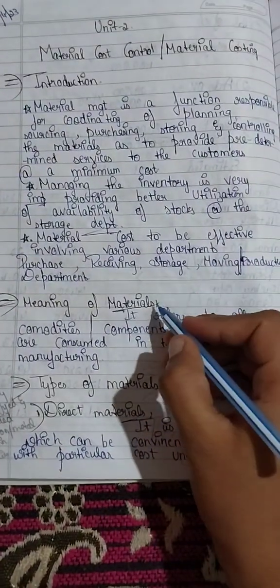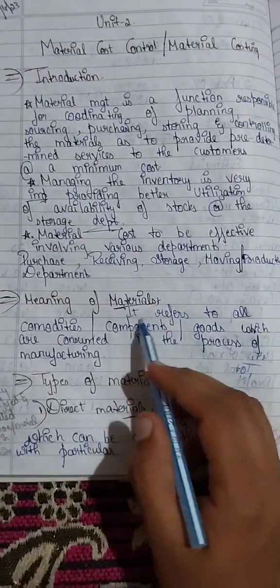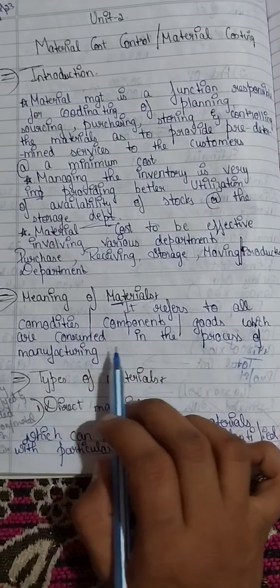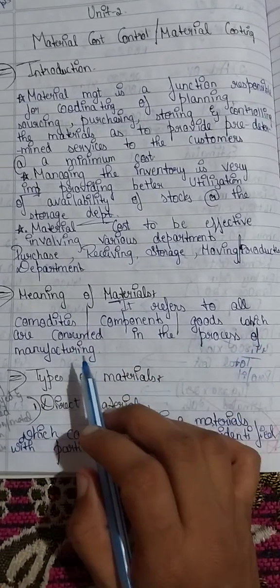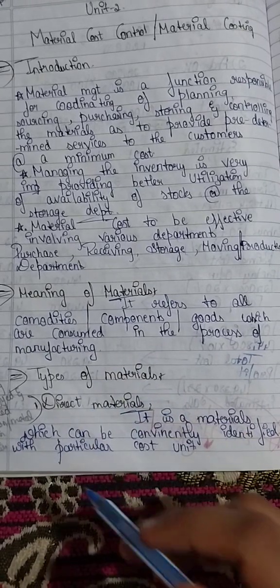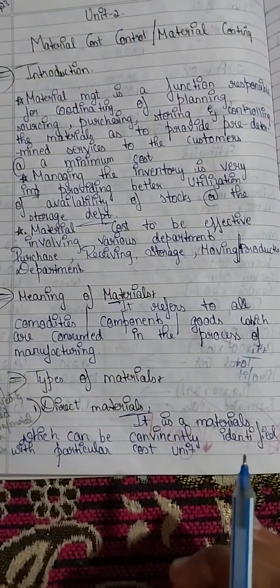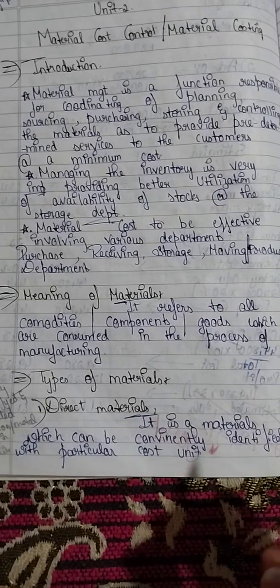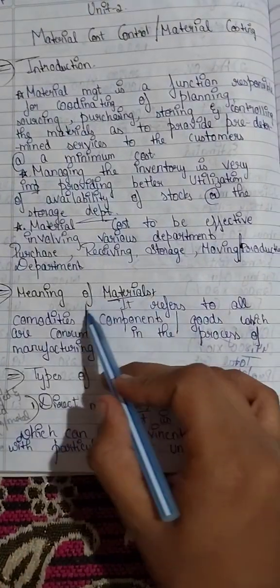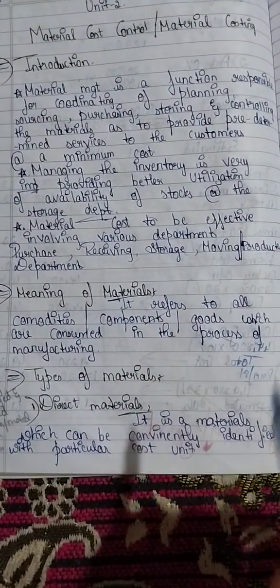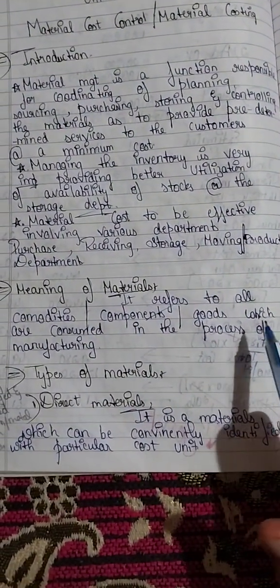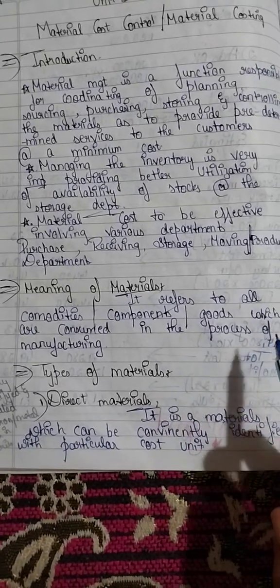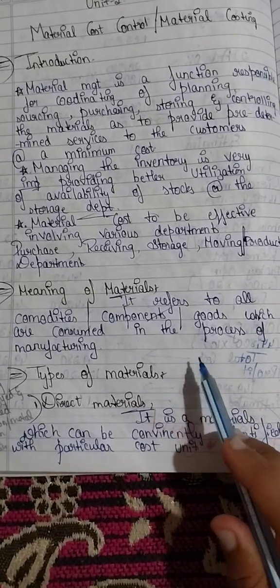I'm going to explain the meaning of material. It refers to all commodities, components, or goods which are consumed in the process of manufacturing. Material usually includes goods, commodities, and components used in manufacturing.